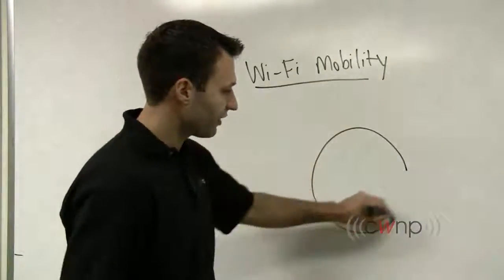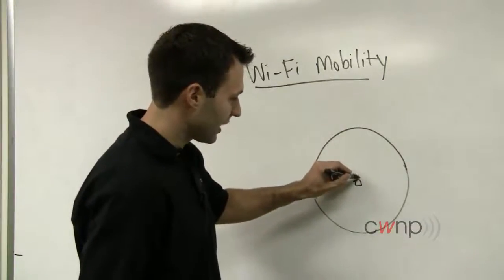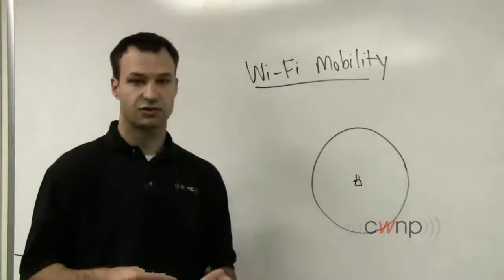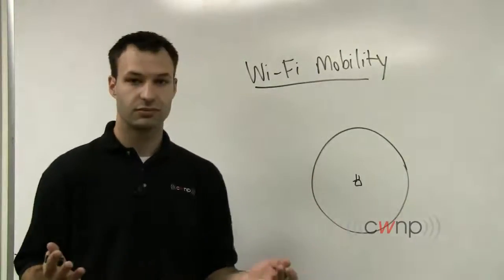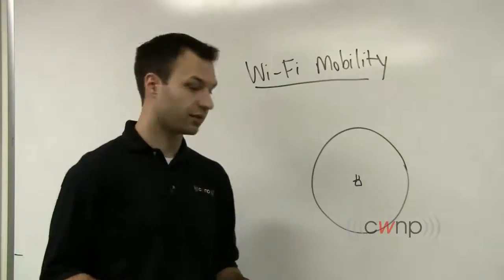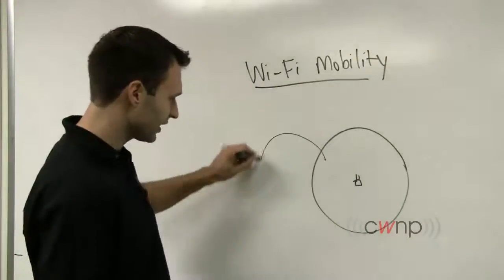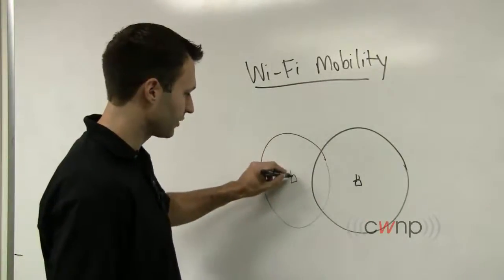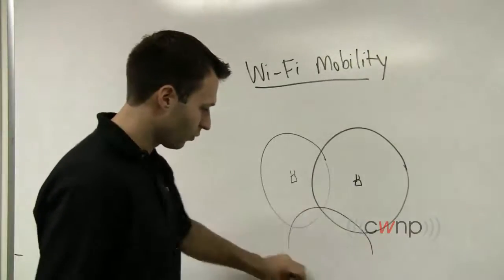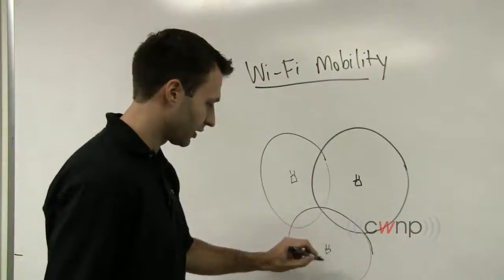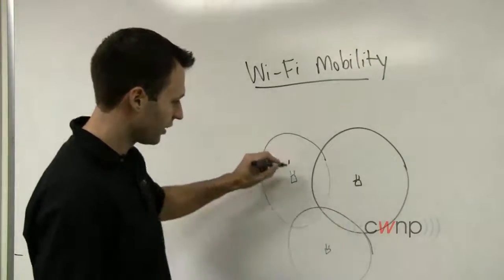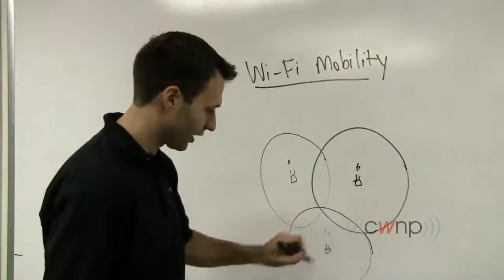So we have an access point here, and this circle represents its service area, out to some sort of arbitrary signal strength. And then we're going to give this access point a neighboring cell, and then one neighboring below it as well. So these are three access points. We'll call this channel 1, channel 6, and channel 11.